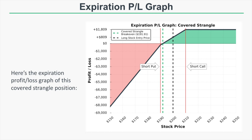Profit potential is capped above $210. If the stock rises to $210, we have a $10 profit on shares plus the $809 strangle premium, for a net profit of $1,809 — $1,000 from the long stock and $809 from the short strangle.